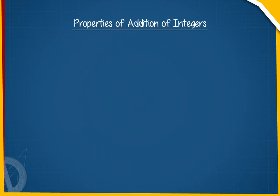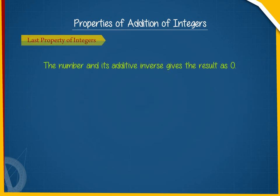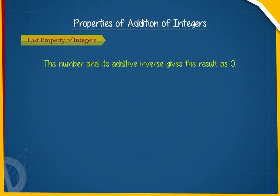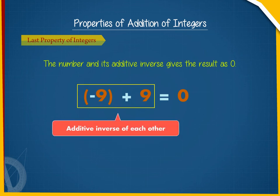The last property says that for every integer, there exists an integer which when added to the original integer, the sum is 0. It means taking the number and its additive inverse gives the result as 0. For example, minus 9 and 9 will give the result as 0. Here, minus 9 and 9 are additive inverse of each other.